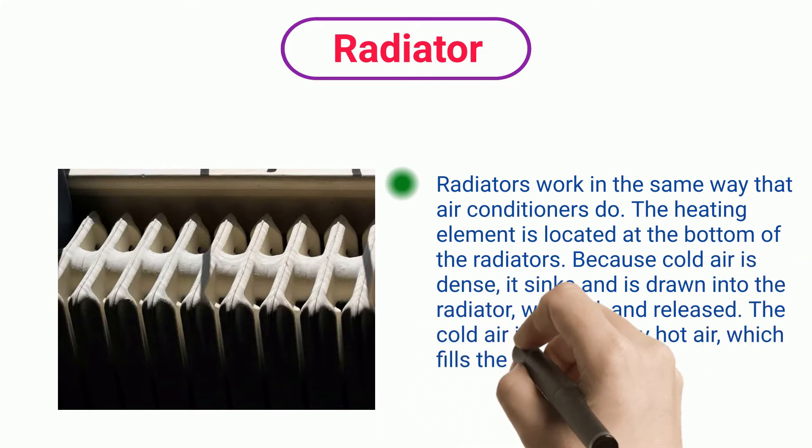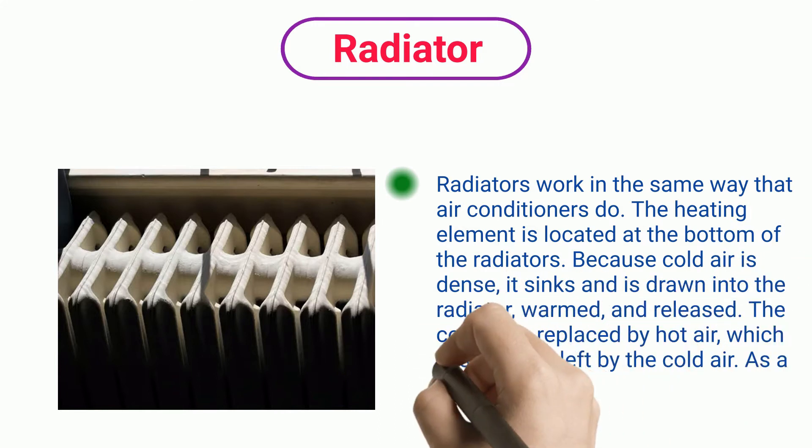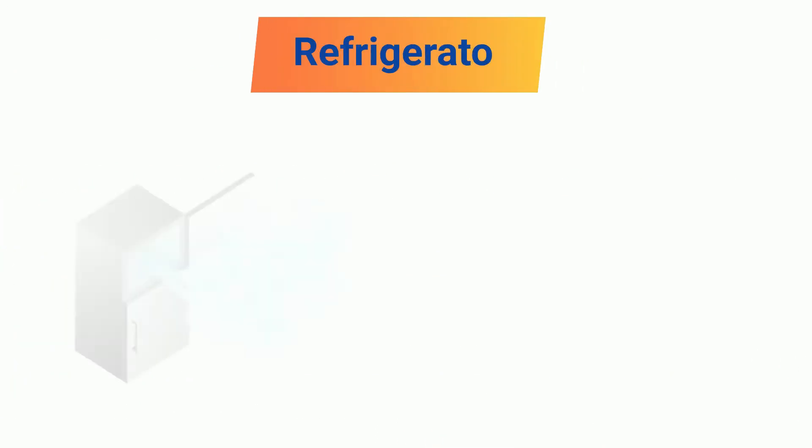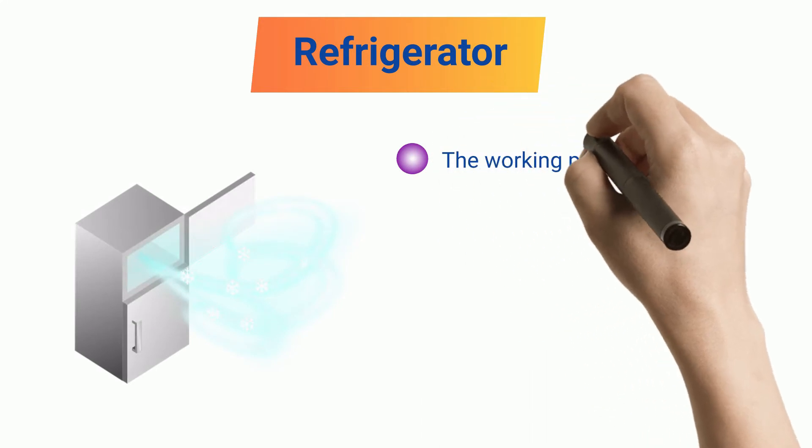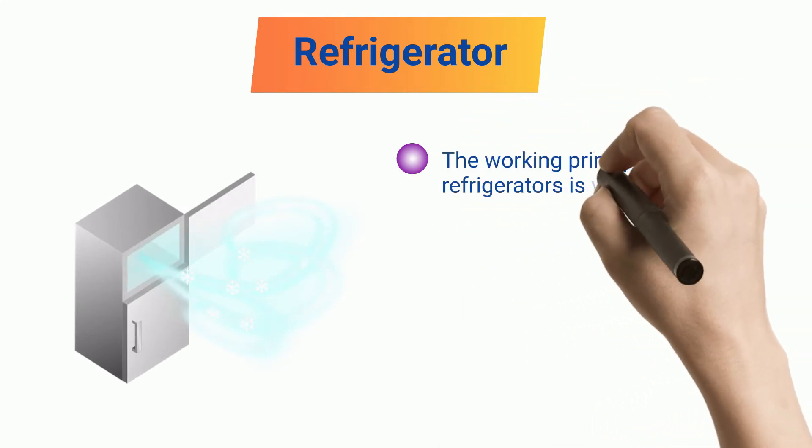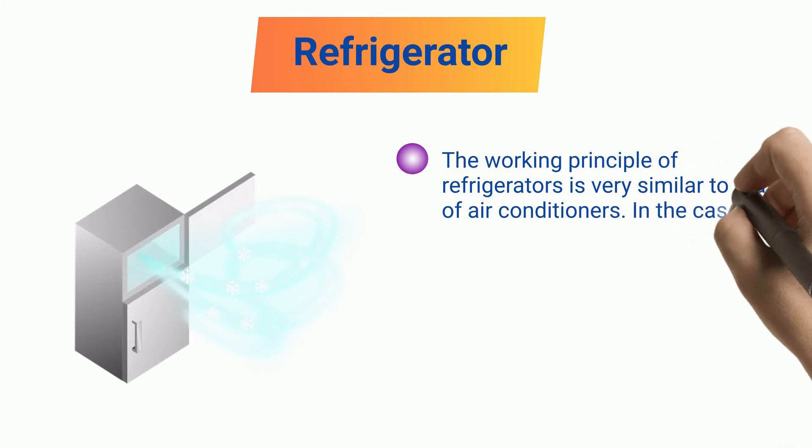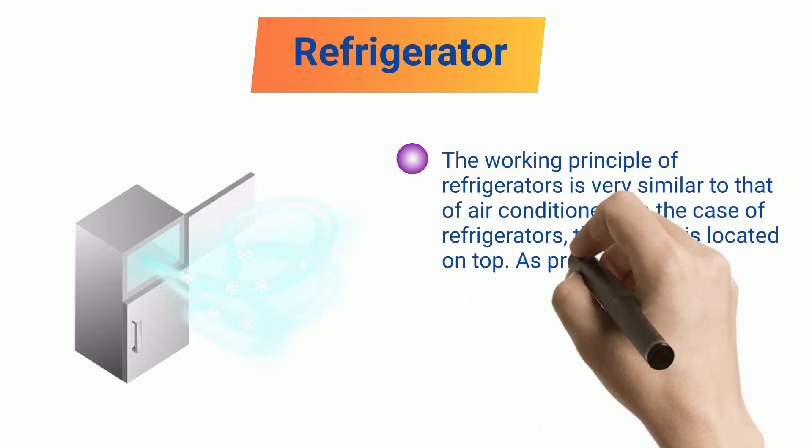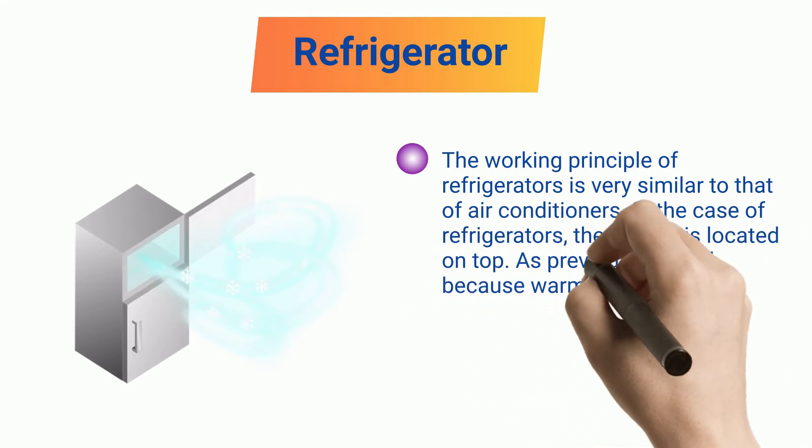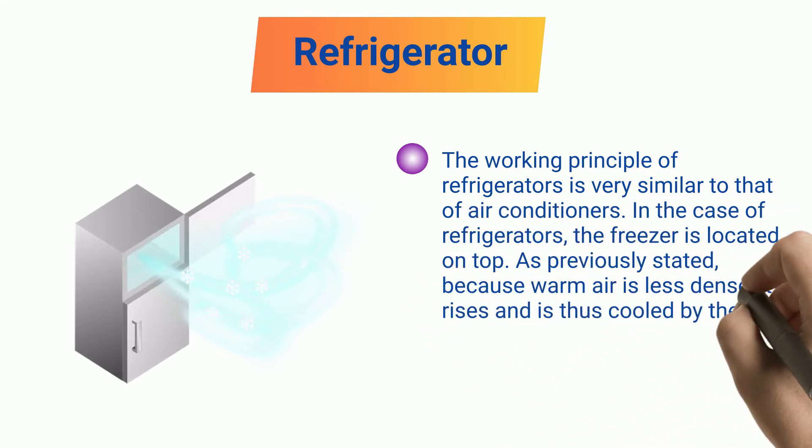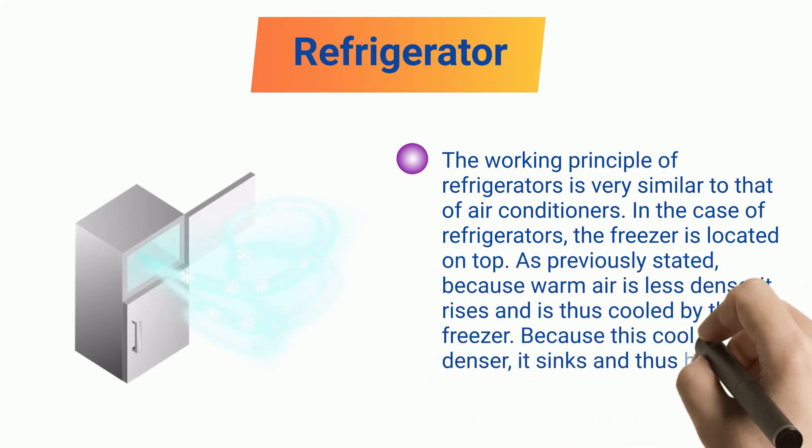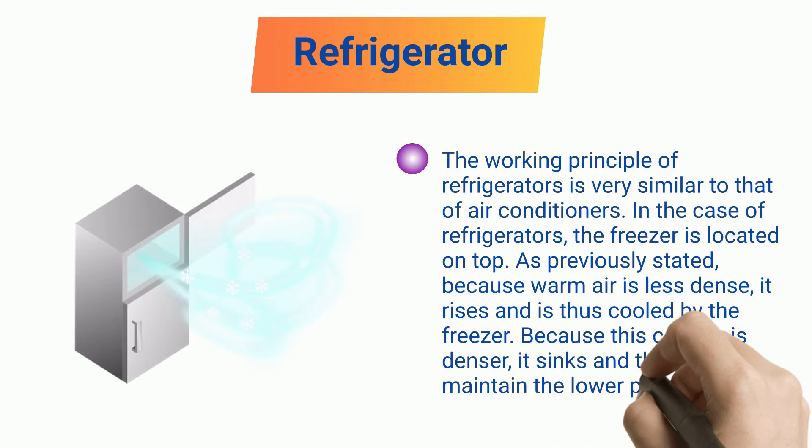Refrigerator: The working principle of refrigerators is very similar to that of air conditioners. The freezer is located on top. Because warm air is less dense, it rises and is cooled by the freezer. This cool air is denser, so it sinks and helps maintain the lower part of the refrigerator cool.